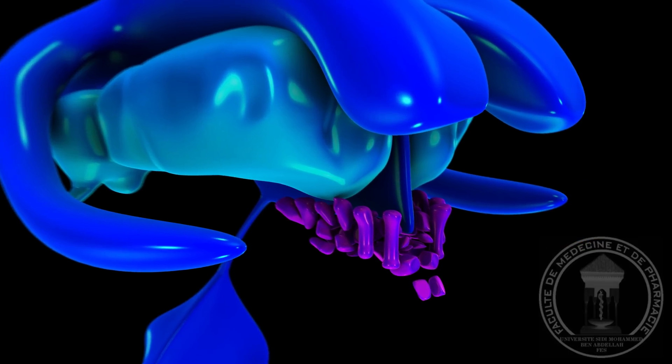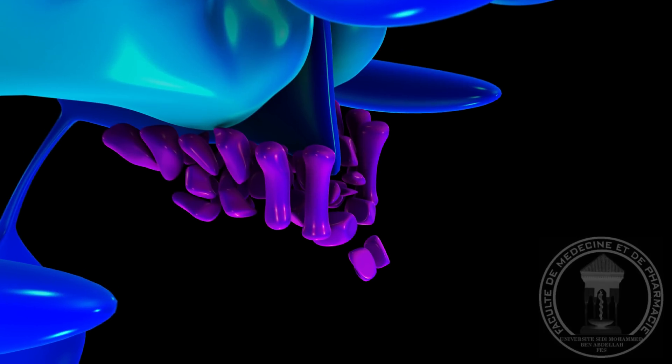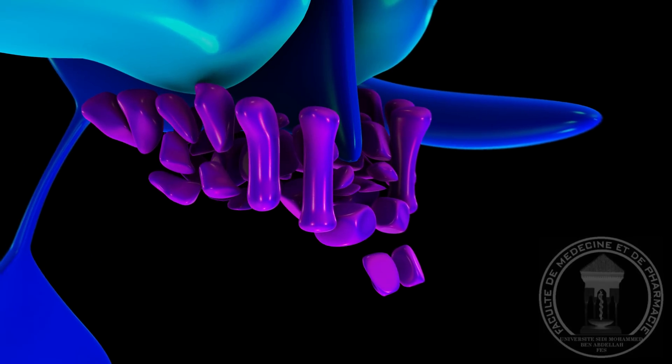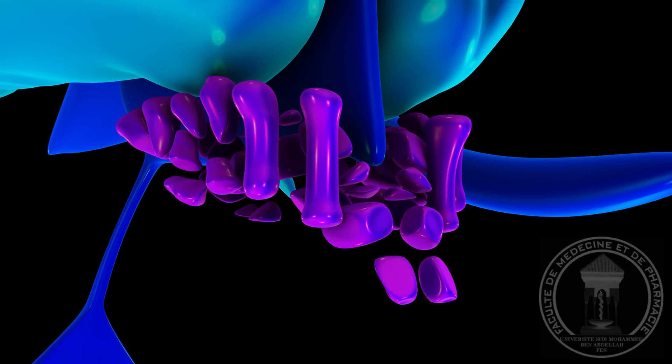يقع ما تحت المهاد أو الوطاء مباشرة أسفل وأمام المهاد وعلى الرغم من صغر حجمه مقارنة بالمهاد فإن أدواره الحيوية في الجسم لا تقل أهمية عن هذا الأخير